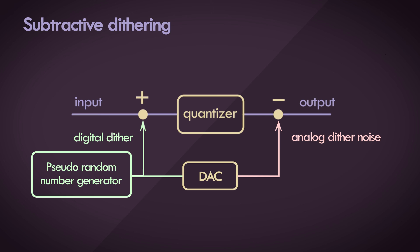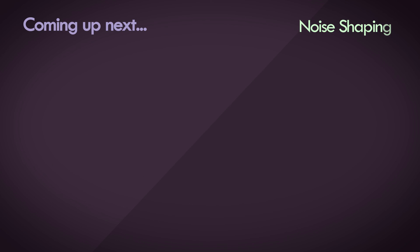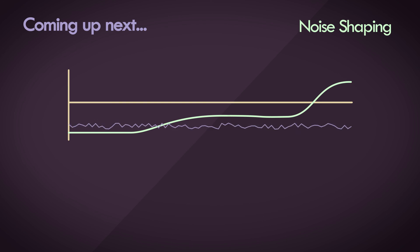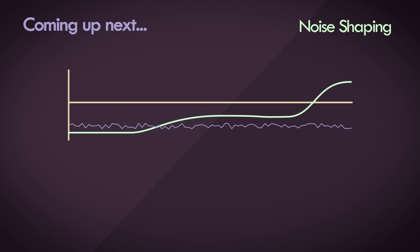This topic is way beyond the scope of this module, so we won't go deeper into it. Coming up next is noise shaping, and how it's applied in tandem with dithering to reduce our perception of the noise in the output signal.